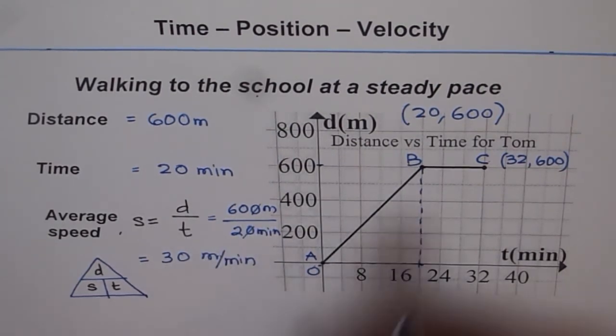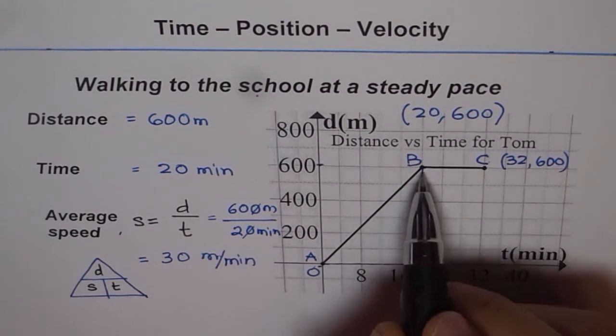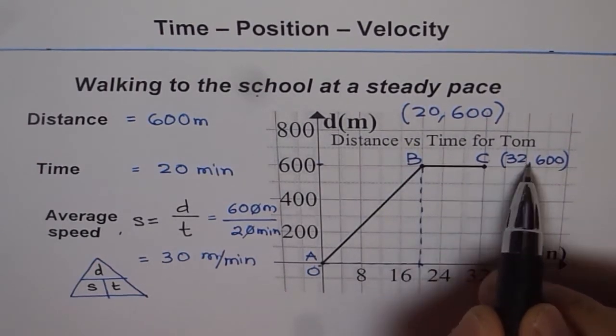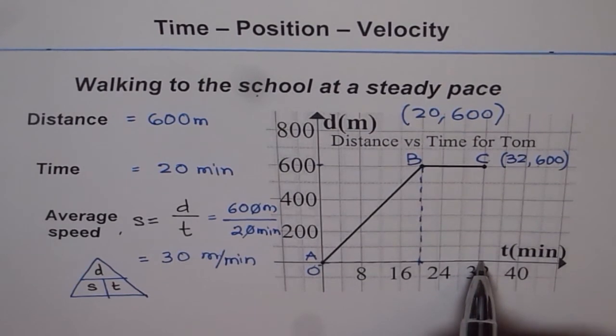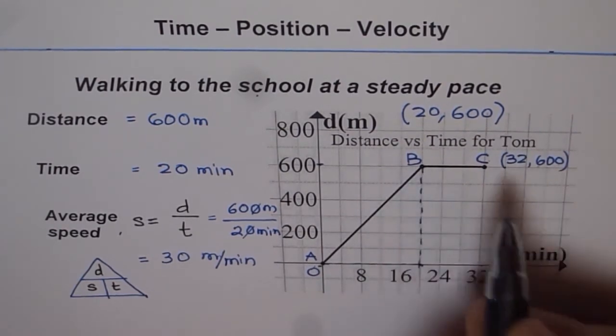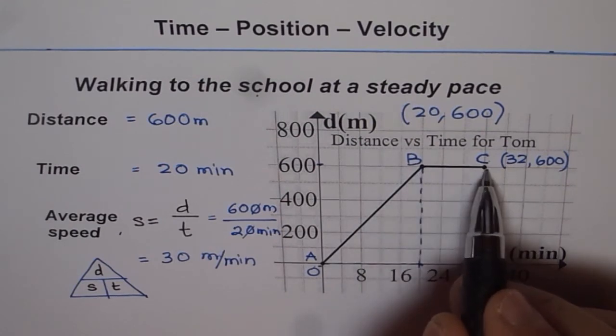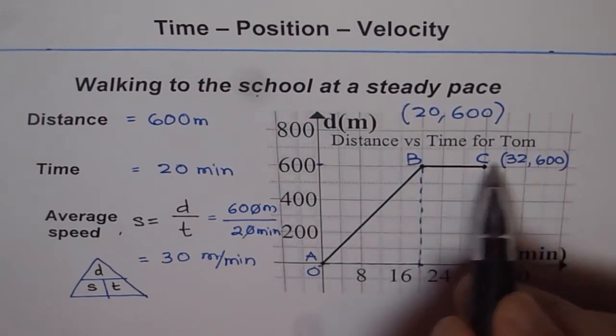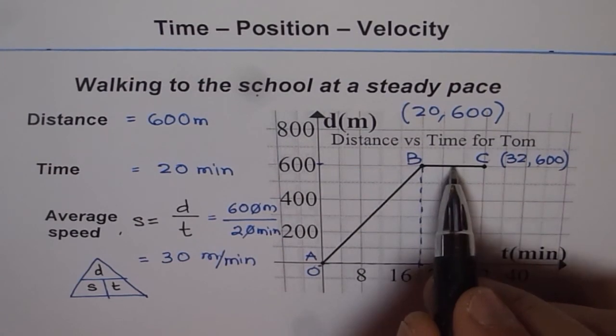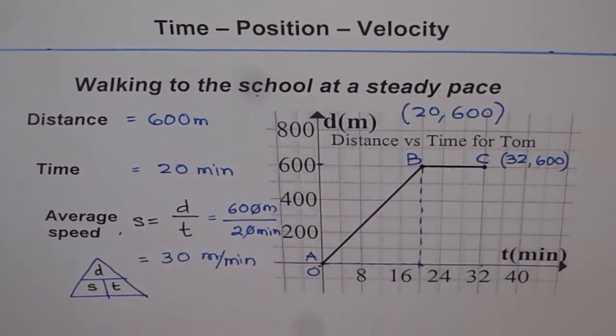Here we have a horizontal line. So from B to C, distance did not change, but the time changed. That means Tom is at the school all along this time. And the speed here will be 0. 600 minus 600, no change in position gives you 0. So speed for a horizontal line is going to be 0 for us. So that is how we can read some of the parameters from our graph. In the next example, we'll learn more about similar graph. I hope you understand the concept.